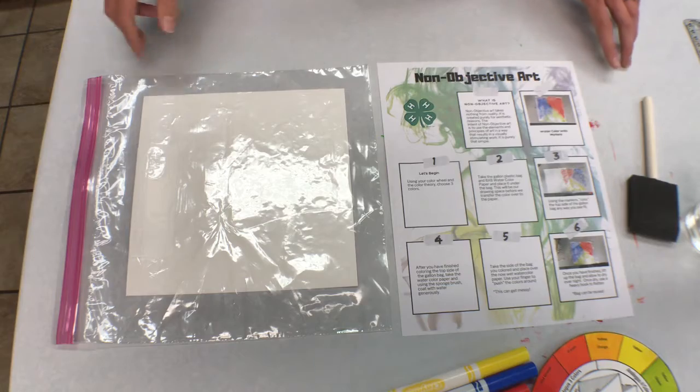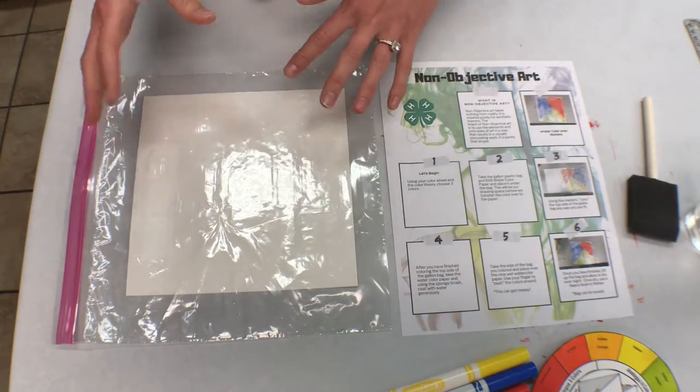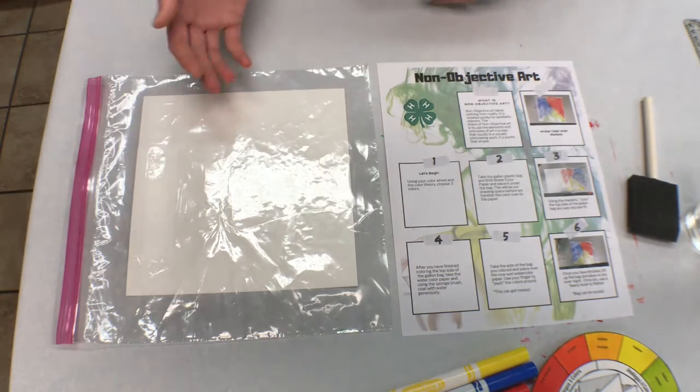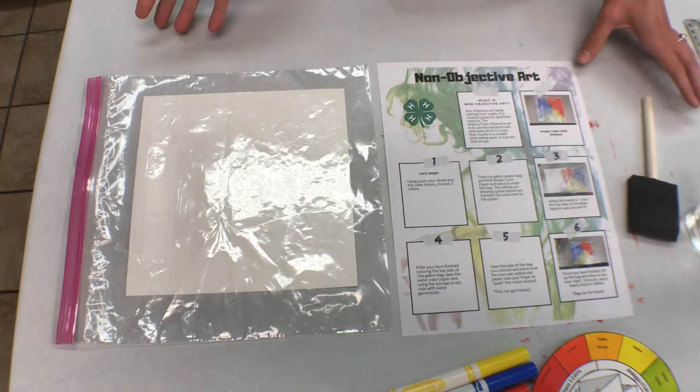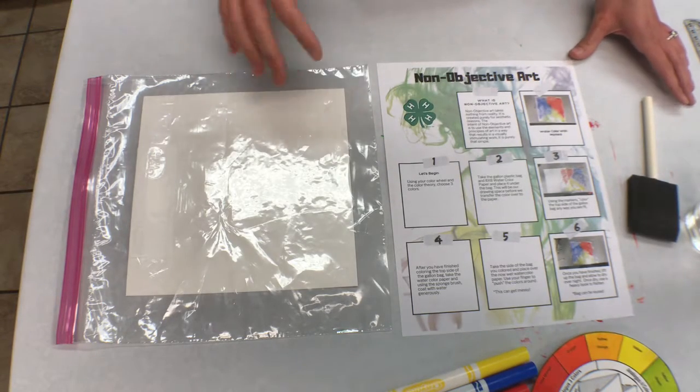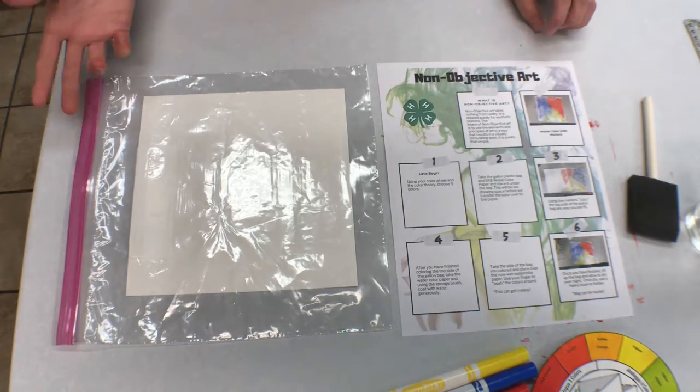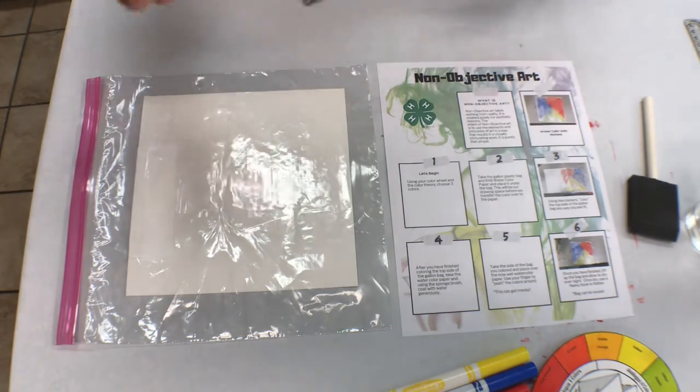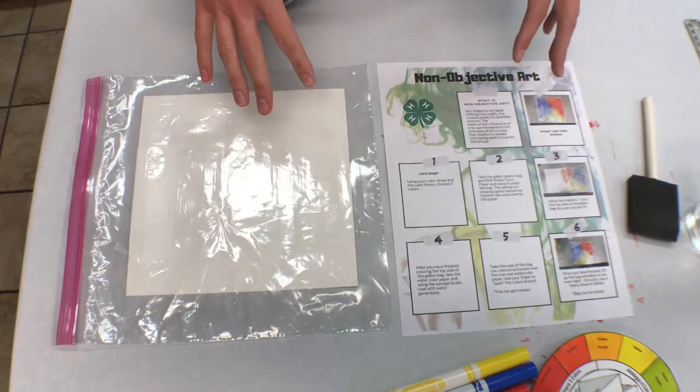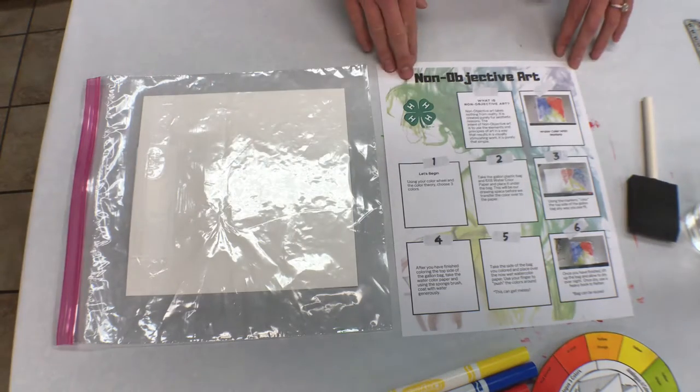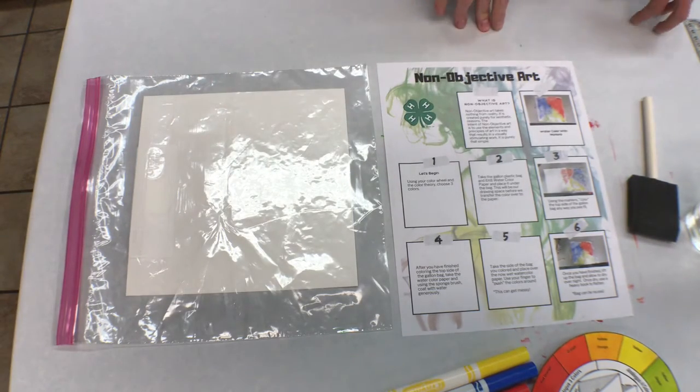Non-objective art differs from that because no matter what angle or when it's pointed out, you will not see any identifiable figures, shapes, nothing that can be identified such as a dragonfly, an arrow, a star, or our 4-H logo. That's how non-objective art differs from abstract art.